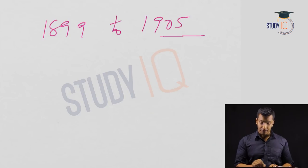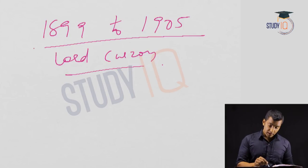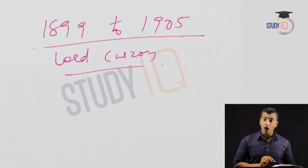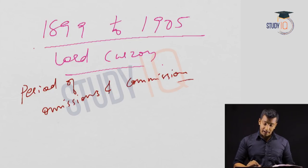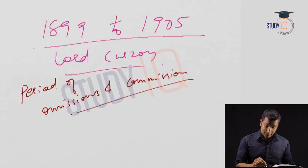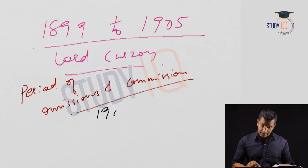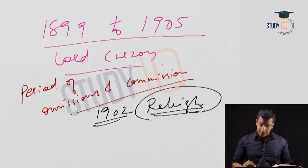Lord Curzon served from 1899 to 1905. His period in history is known as the 'period of omissions and commissions' because he appointed lots of commissions. The first commission to discuss is the 1902 Raleigh Commission, which was appointed to look after education.